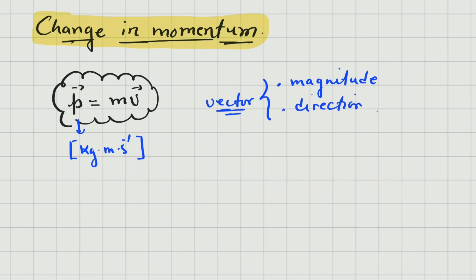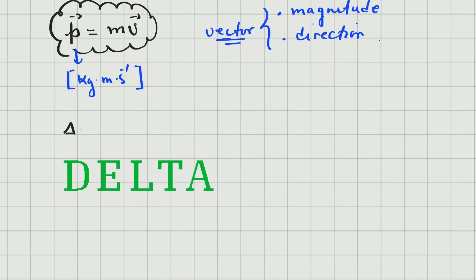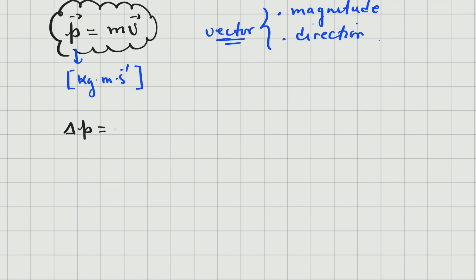Today we're speaking about change in momentum. In physics, all changes are final minus initial, and the symbol for change is the Greek letter delta. So delta P, which means change in momentum, equals final momentum minus initial momentum. This applies to any physical quantity — it's always final minus initial.